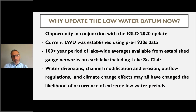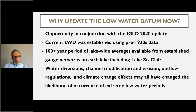Taking advantage of the upcoming IGLD 2020 update, the Vertical Control Water Level Subcommittee has been charged with re-examining the current low water datum level with the possibility of suggesting any changes that might make sense. There now exists over 100 years of lake-wide average data available from the established network of gauges on each lake, including Lake St. Clair. Over the past century, the likelihood of occurrence of extreme low water periods might have been affected by water diversions, channel modifications, erosion, outflow regulation, and climate change.